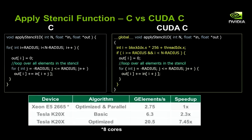Looking at the performance of the CPU code: if we optimize it and make it parallel by adding pragmas for OpenMP and vectorization, we can get up to 2.75 giga elements a second. If we take this CUDA code exactly as shown and run it on a Tesla K20X, we get 6.3 giga elements a second, which gives us a 2.3x speedup over the parallel and optimized version of the original CPU code.